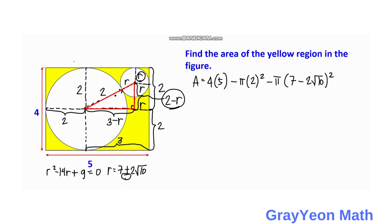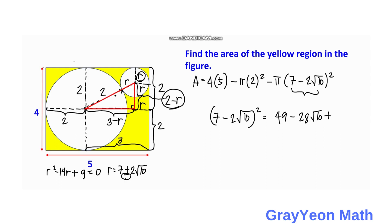We focus on squaring (7 minus 2 root 10). That equals 49 minus 2 times 7 times 2 root 10, plus (2 root 10) squared. The middle term is 28 root 10, and (2 root 10) squared equals 4 times 10 which is 40. So 49 plus 40 equals 89, giving us (7 minus 2 root 10) squared equals 89 minus 28 root 10.